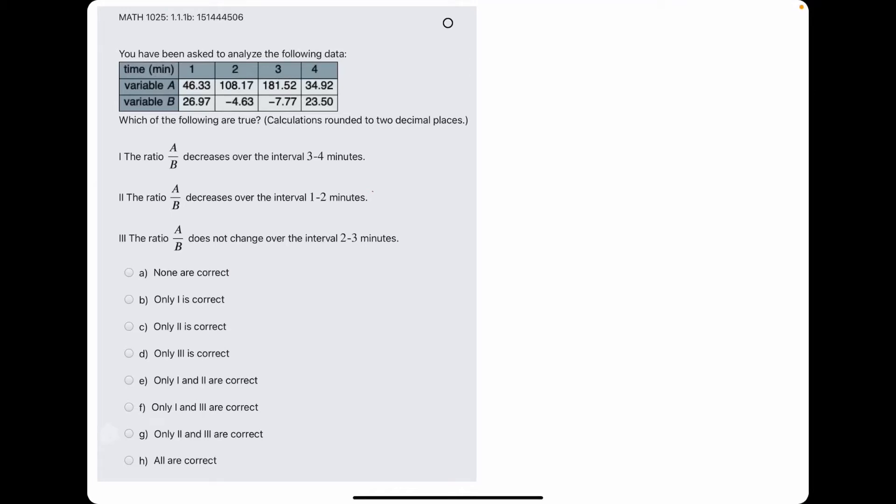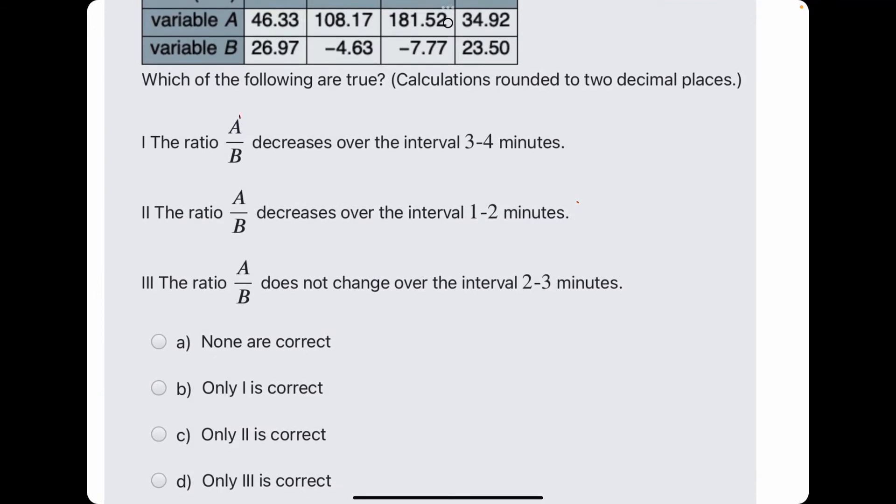In this problem, they give us a chart of time, variable A and variable B, and they ask which of the following statements are true. And the only concern, really, is the ratio of A over B.